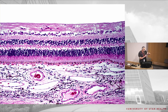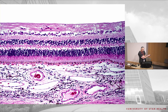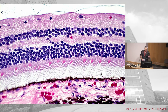Continuing the layers: outer nuclear, then photoreceptors, then RPE, then choriocapillaris, and then the medium and large vessels of the choroid. Let's start again at the top — the internal limiting membrane. What forms it? The footplates of the Müller cells. It's not really a membrane; it's the footplates of the Müller cells.